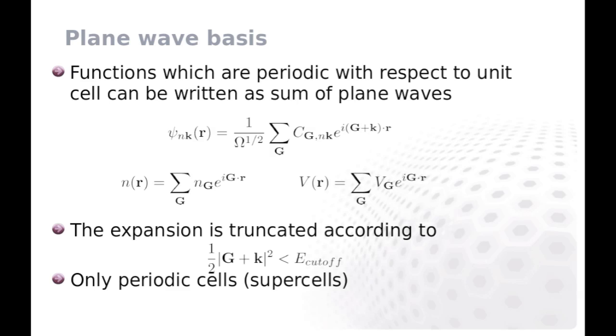The third basis set offered by GPAW is the plane wave basis. According to Fourier analysis, any function which is periodic with respect to simulation cell can be written as a sum of plane waves, where G are reciprocal lattice vectors. The number of basis functions is typically determined by specifying a cutoff energy for the expansion.